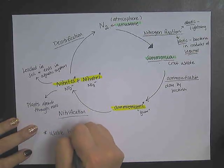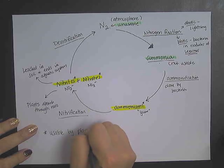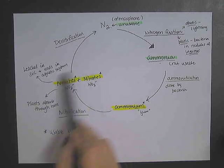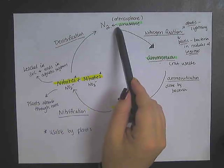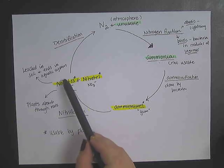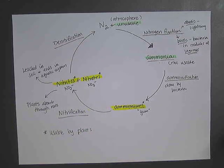Usable by plants. And again, plants will absorb it through their roots. And any excess nitrogen in the area can either be converted back into nitrogen gas, or if there is water and runoff, it'll get leached into aquatic systems.